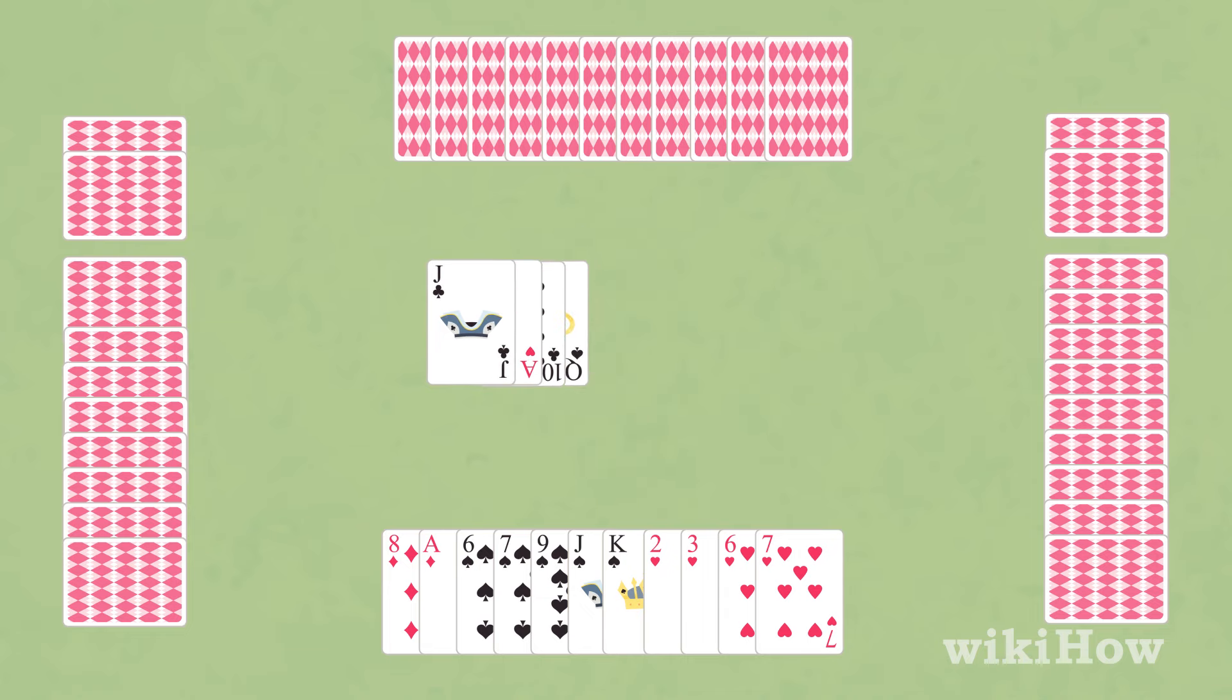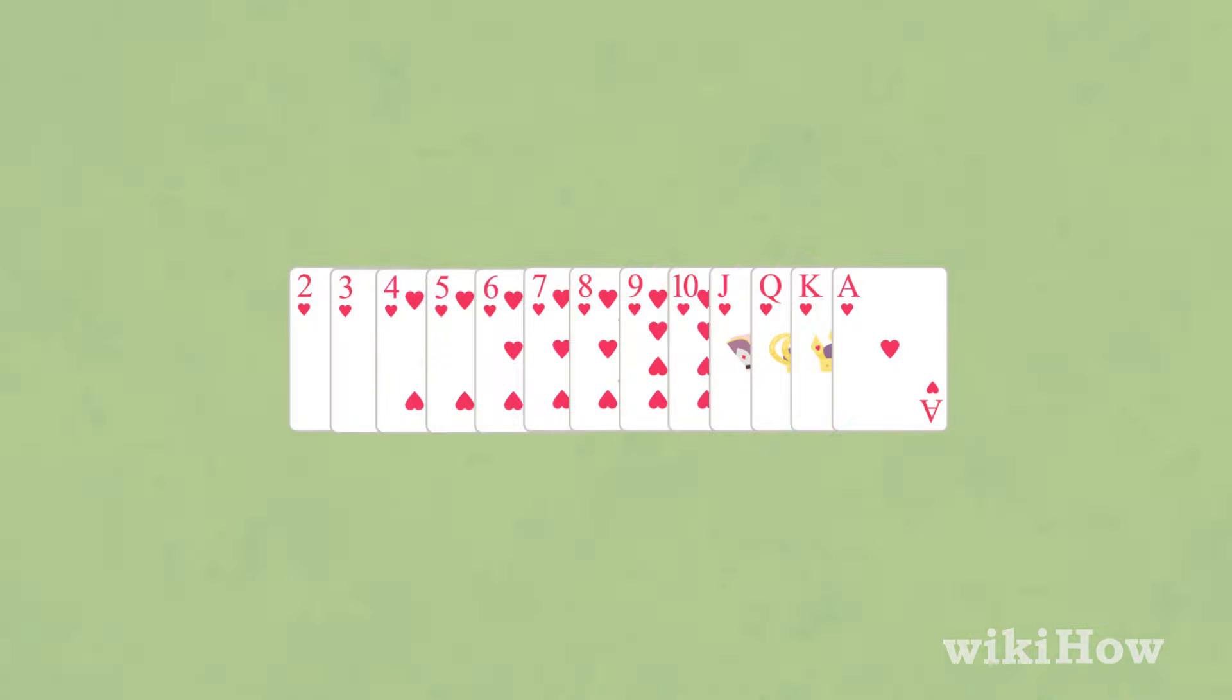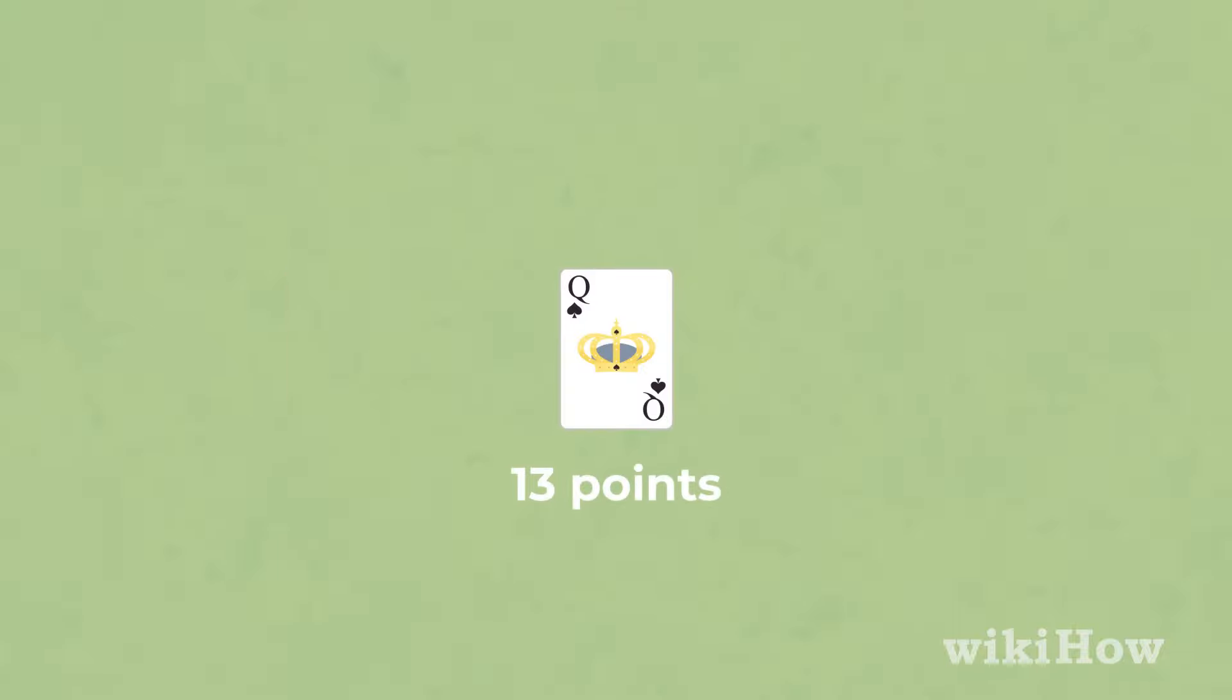Once all of the cards have been played, each player adds up the points in the cards they collected that round. Heart cards count as one point, and the Queen of Spades counts as thirteen points.